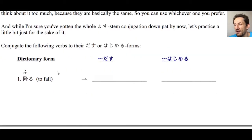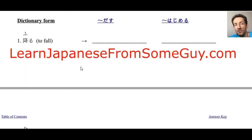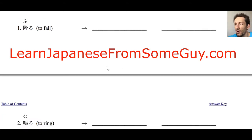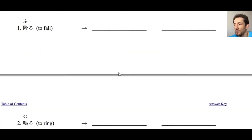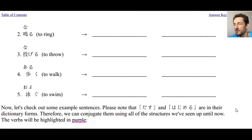We're going to do a little practice. I have some verbs, and in the first column you'll write the masu stem plus dasu, and in the second the masu stem plus hajimeru. Remember you can go to learnjapaneseformsomeguy.com, print out the PDF, and I always encourage you to write the kanji and hiragana — it's very important. Pause the video and answer numbers one through six.